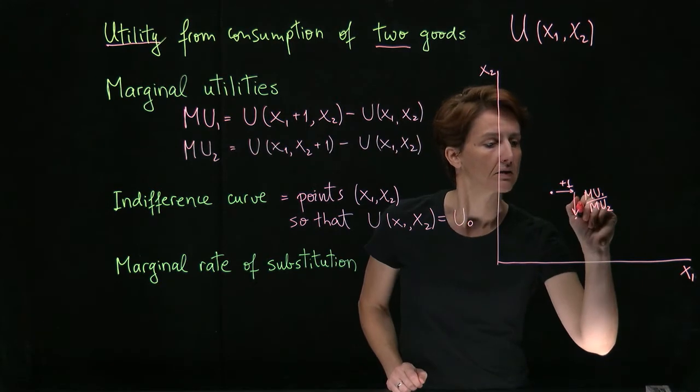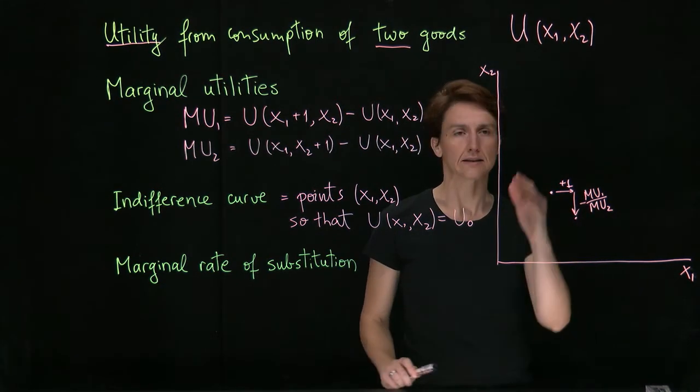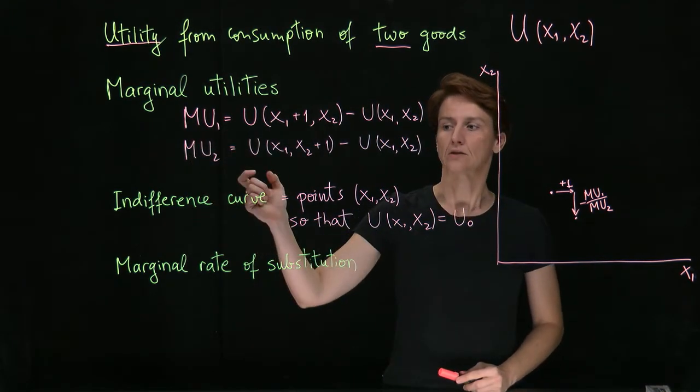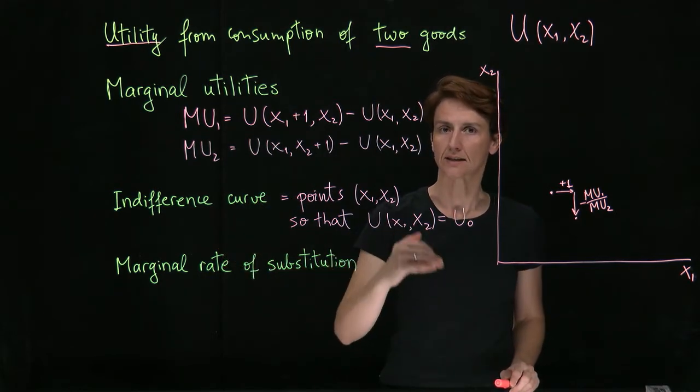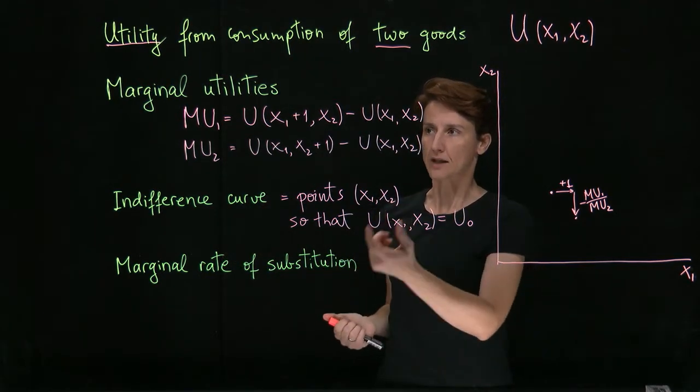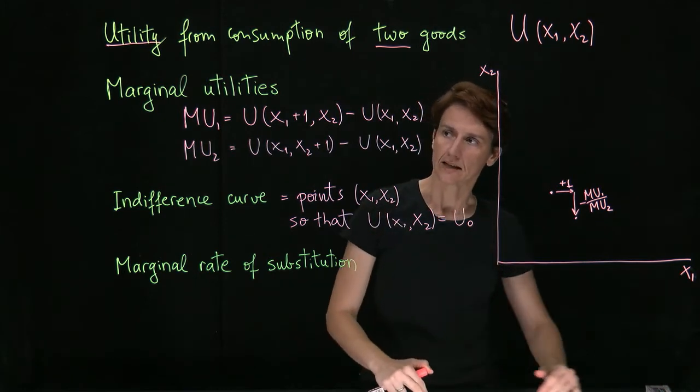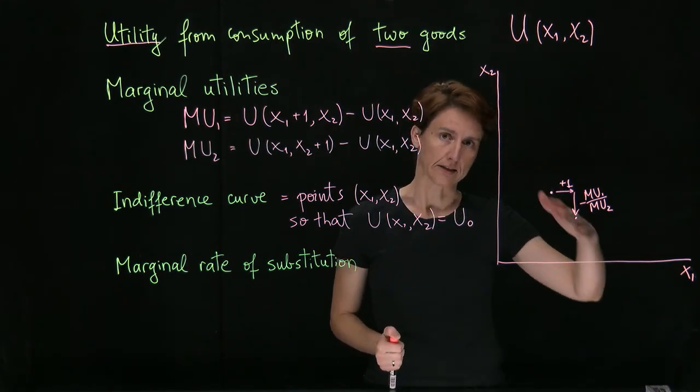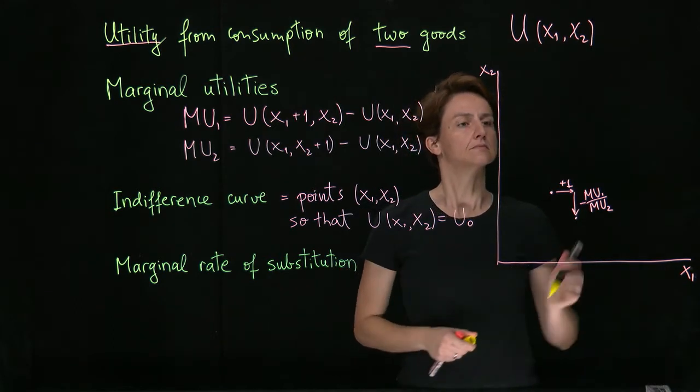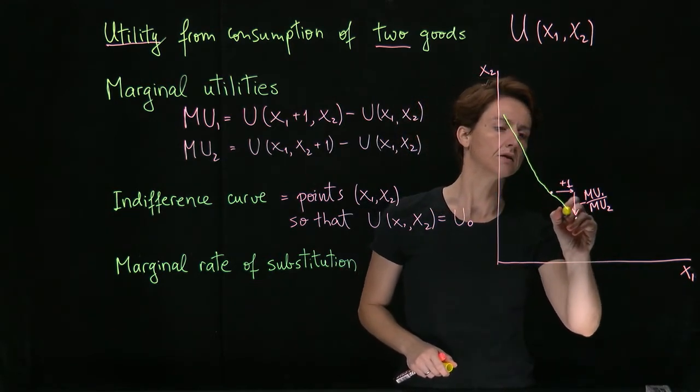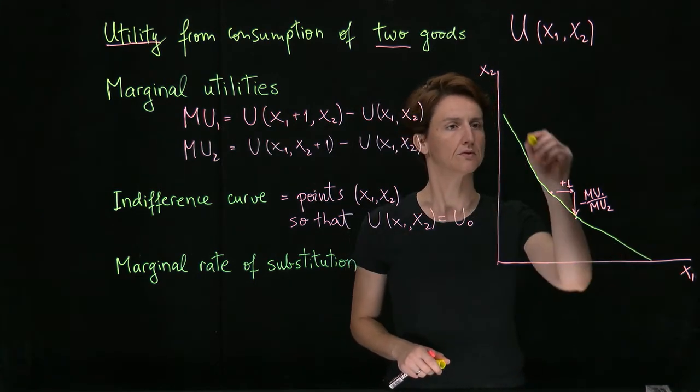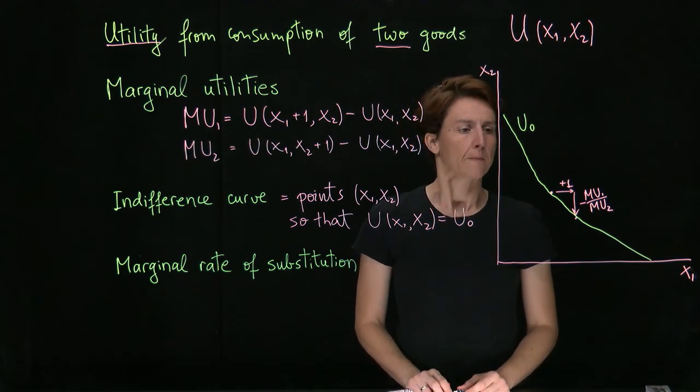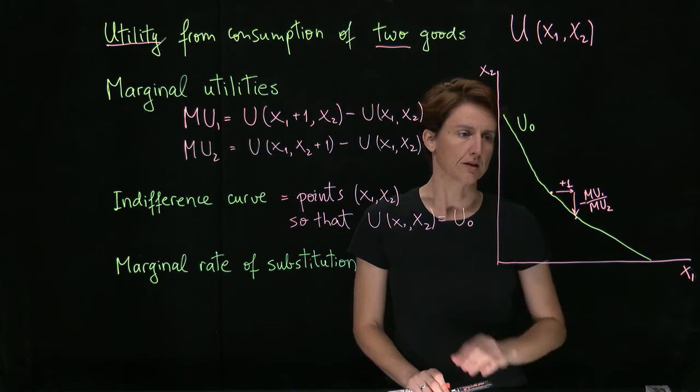So this will now be another point on the indifference curve that goes through the initial point. And so already, you can hopefully see that indifference curves will necessarily be downward sloping, at least as long as both marginal utilities are positive. So by definition, along an indifference curve, utility doesn't change. Well, then, if you like both goods, the only way to maintain the same level of happiness when you have more of one good is to have less of the other, hence the negative slope. So indifference curves are always going to be negatively sloped if marginal utilities are positive.